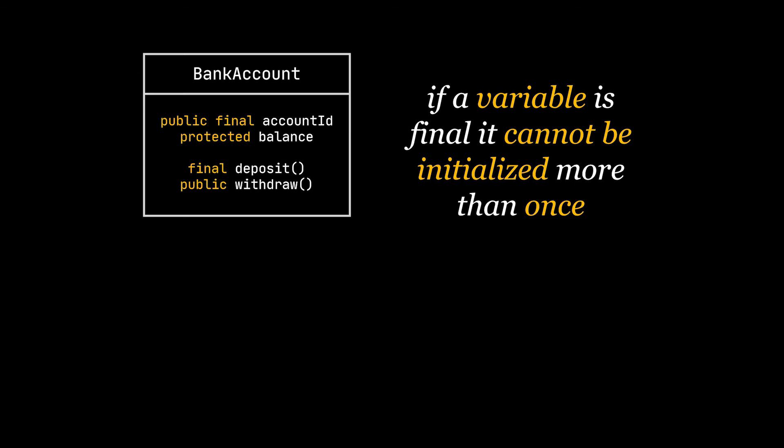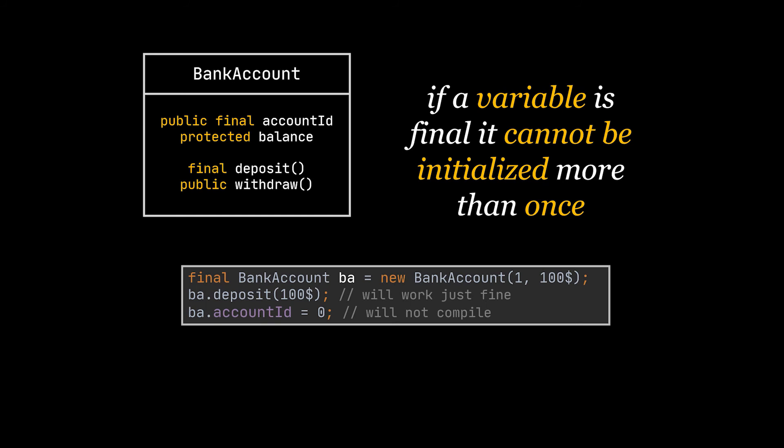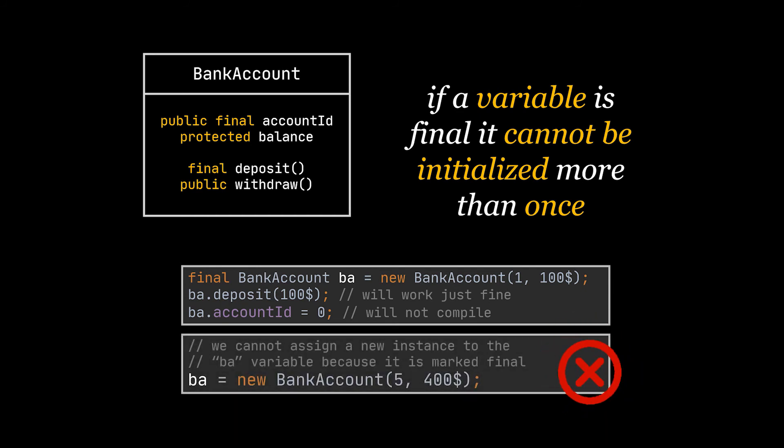So if we were to create a final BankAccount instance as shown in this example, we would be able later on to change the balance of that BankAccount if we want using the deposit or withdraw methods, but we cannot change the accountId anymore - it has to be assigned in the constructor or when instantiating the field because it is final. In addition to this, in our code snippet, because the ba variable is final, we cannot assign a new instance of a BankAccount to that same variable, or in other terms use the new keyword to assign a new instance to the same ba variable.